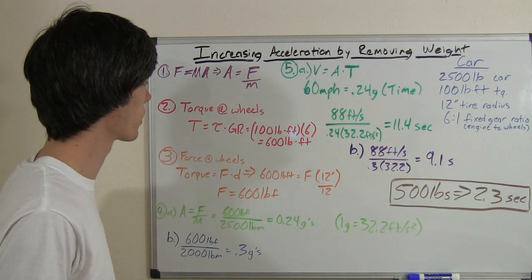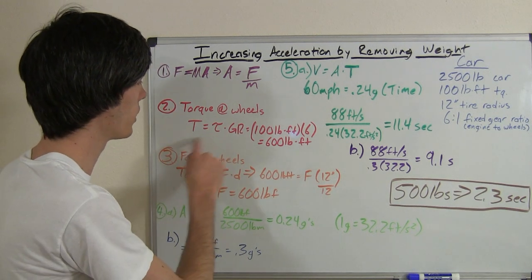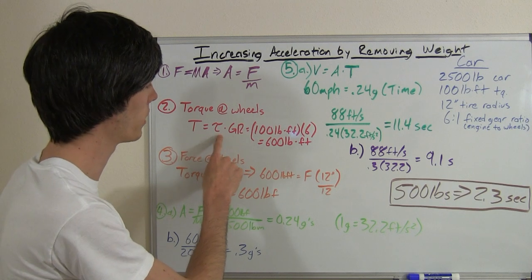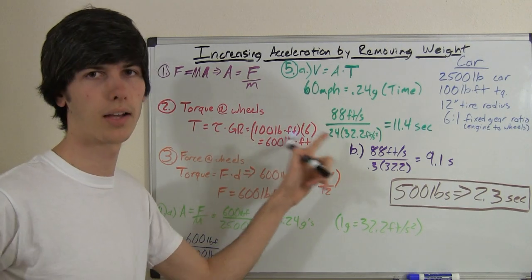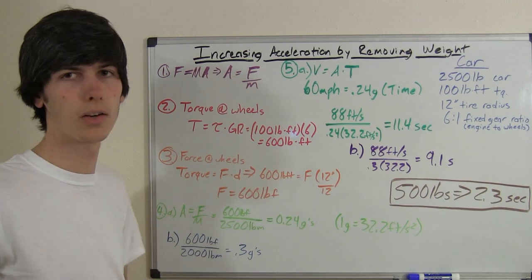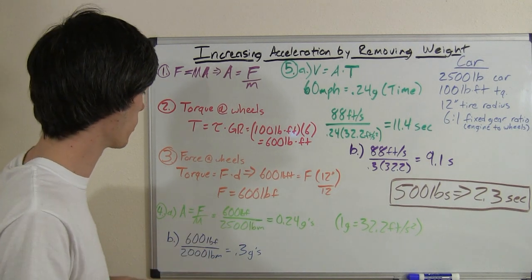All right, step number two. Let's find the torque at the wheels. Very simple. All we need to do is multiply the torque produced by the engine by the gear ratio. So we've got 100 pound feet of torque times 6, and that's going to give us 600 pound feet of torque going to the wheels.